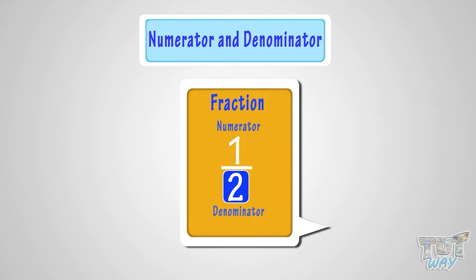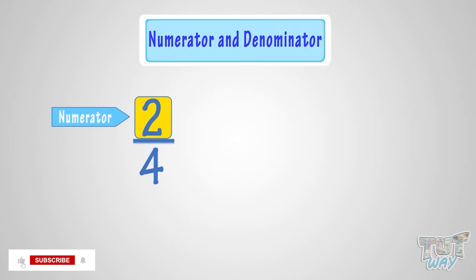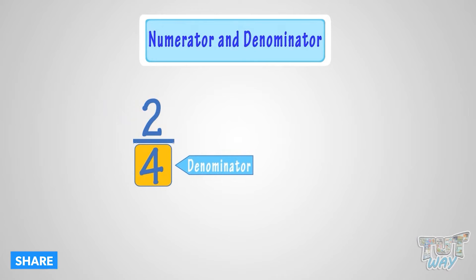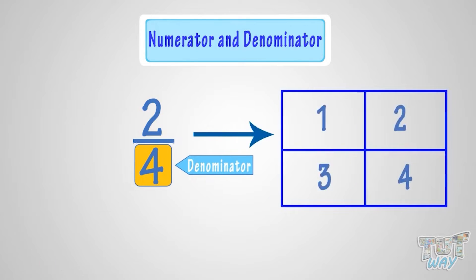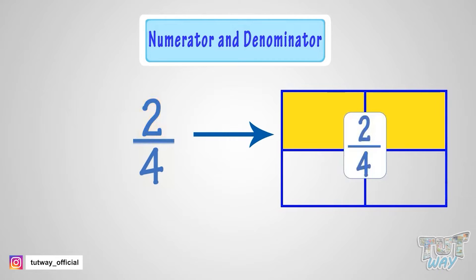Let's take an example. Here is a fraction two by four. Here, two is the numerator and four is the denominator. Denominator tells us how many equal parts the whole has been divided into. Numerator tells us how many parts of a whole are being considered. So two by four means two parts out of four equal parts of a whole.